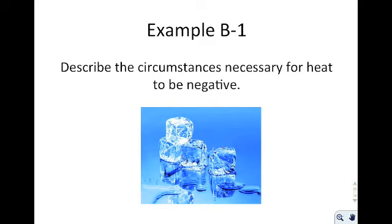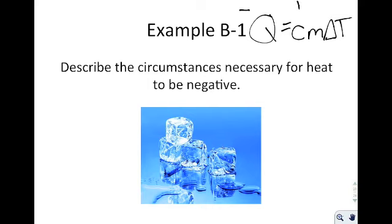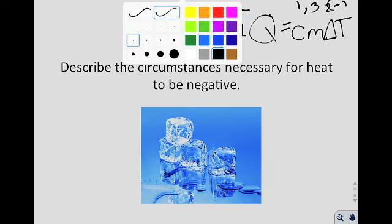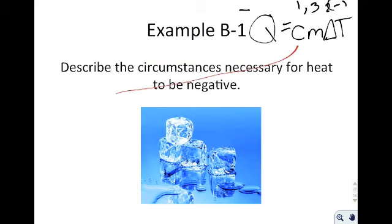Example B1: Describe the circumstances necessary for heat Q to be negative. Looking at the equation Q = CmΔT, to get a negative Q, either one or three variables must be negative. The specific heat capacity can't be negative — you can't take energy away and have temperature go up. Mass can't be negative — the least amount of matter you can have is zero.